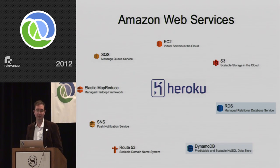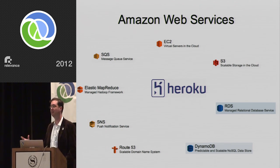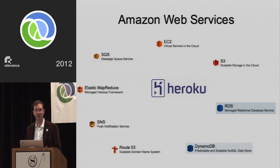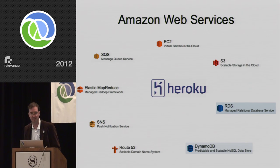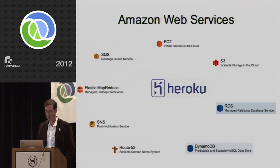Heroku conveniently runs on Amazon. Beyond EC2 for virtual machines, Amazon has dozens of other services. S3 recently started charging a penny a gigabyte, which is a game-changer. They also offer databases, and their queuing service has saved my bacon more than once.